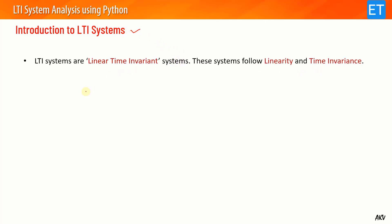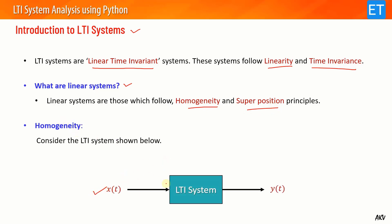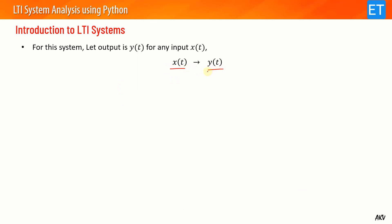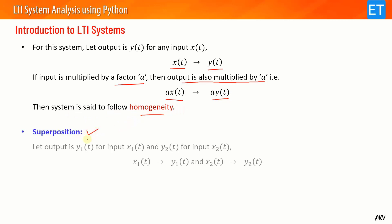First I will talk about the introduction to LTI systems. LTI systems are the linear time-invariant systems — systems which follow linearity as well as time invariance. Linear systems are those which follow the homogeneity and superposition principles. For homogeneity: if for input x(t) my output is y(t), then if the input is multiplied by some factor a, so input becomes a·x(t), then the output is also multiplied by the same factor a to give output a·y(t).